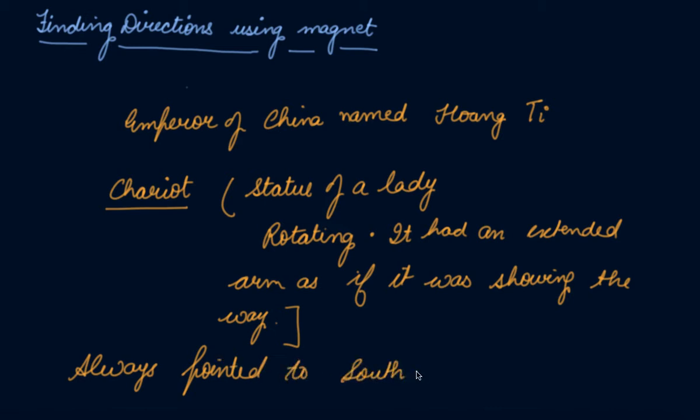When the Emperor used to go on his chariot, the statue of the lady used to point the south, through which he was able to guess the direction. If you know one direction, you will be able to find out the other directions.